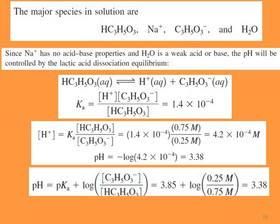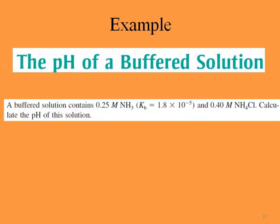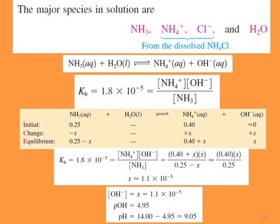Next example: calculate the pH of a solution containing 0.25 molar ammonia (Kb = 1.8 × 10⁻⁵) and 0.40 molar ammonium chloride. The major species are ammonia, ammonium ion, chloride, and water. The reaction is NH₃ + H₂O ⇌ NH₄⁺ + OH⁻. Since we produce hydroxide, we use Kb: Kb = [NH₄⁺][OH⁻] / [NH₃].